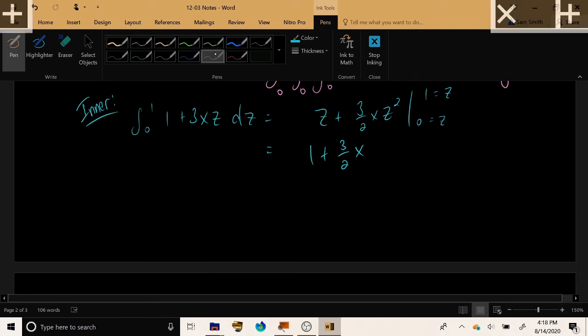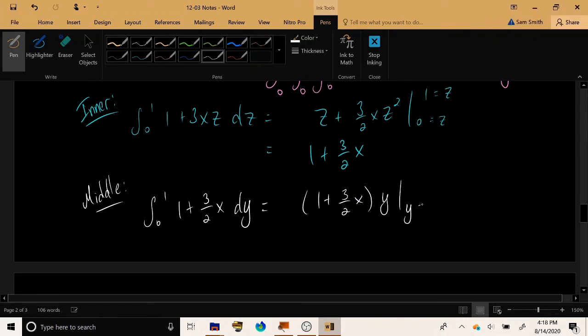For the middle integral, we have the integral from 0 to 1 of 1 plus 3 halves x dy, which is 1 plus 3 halves x times y, evaluated from 0 to 1. Result: 1 plus 3x over 2.